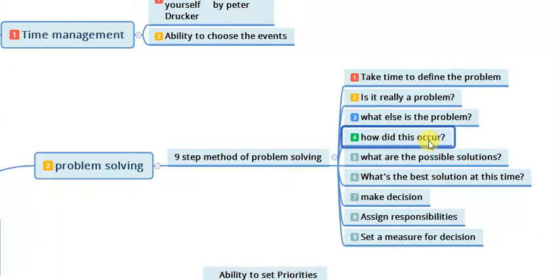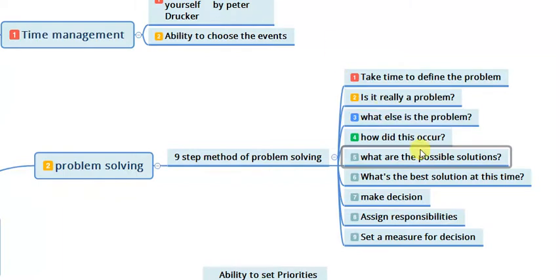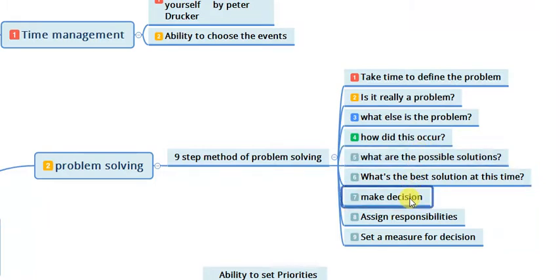The fifth method is to ask: what are the possible solutions for this problem? Once you identify the problem, get to its root, and assess possible solutions, the sixth step is to find the best solution at this particular time. The seventh method is decision making — ask yourself what you want to do and then make a decision. Good decision making is very important for managers and leaders.